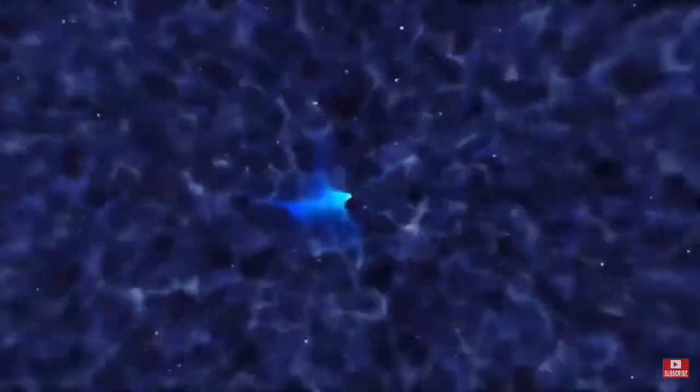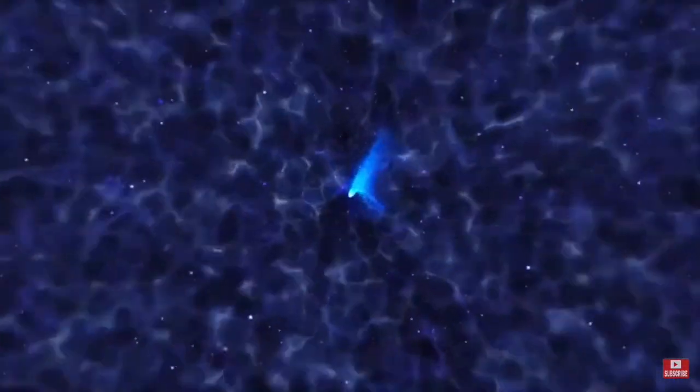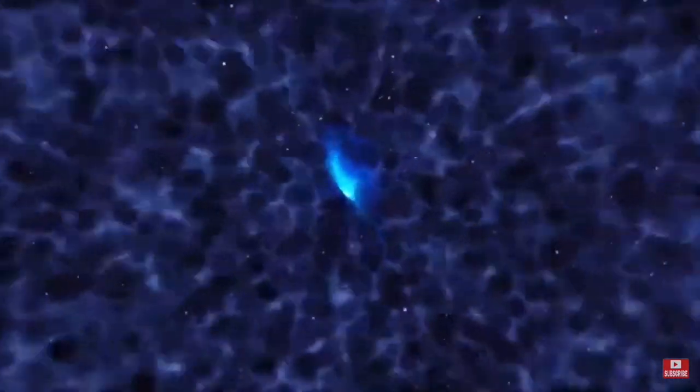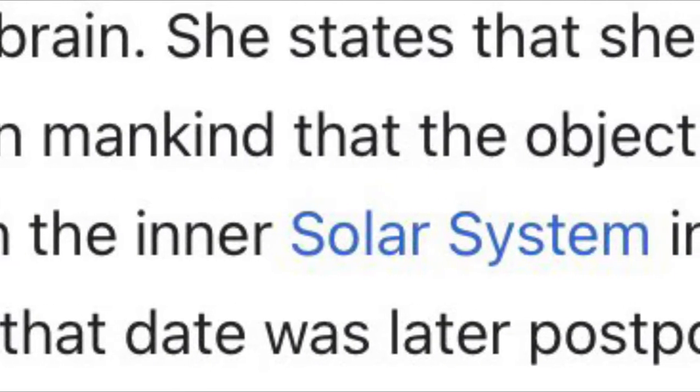Afterwards is Nibiru, which is the idea that at some point in the 21st century, a planetary object will crash into Earth, which has been proven wrong several times by the supposed date of the crash passing. The Wikipedia page for Nibiru has this funny line: she states that she was chosen to warn mankind that an object would sweep through the inner solar system in May 2003, though the date was later postponed.